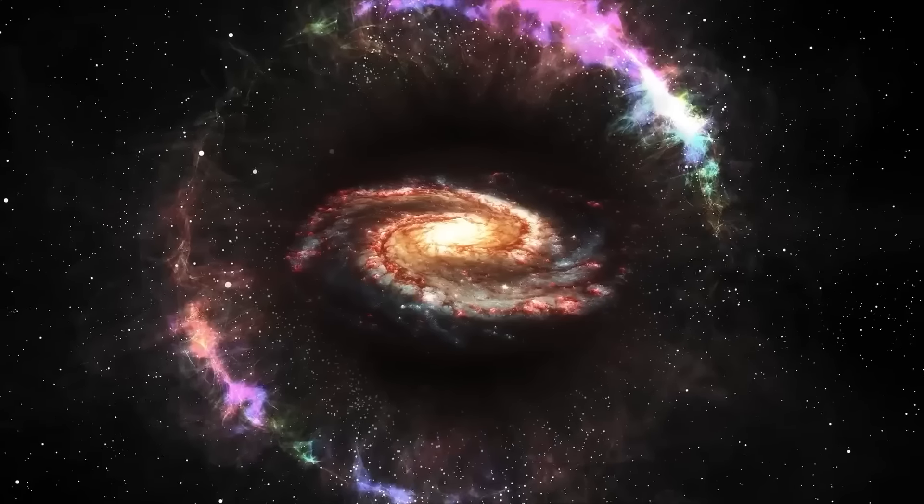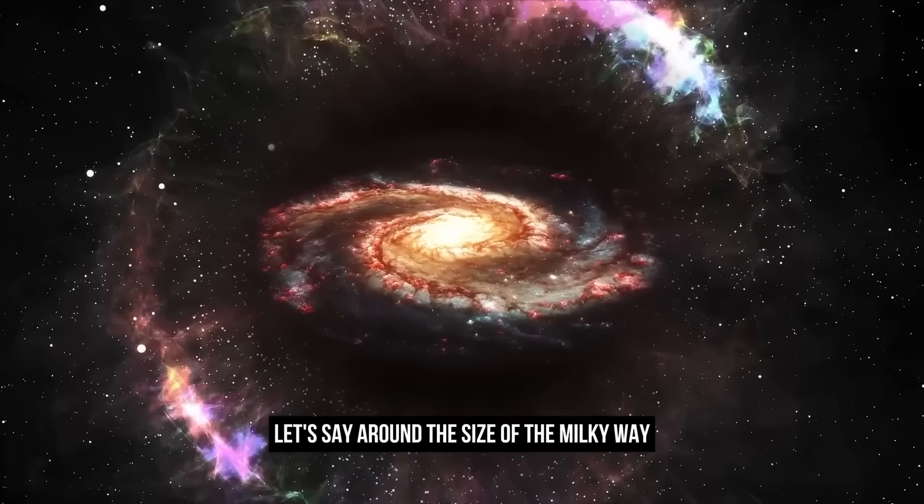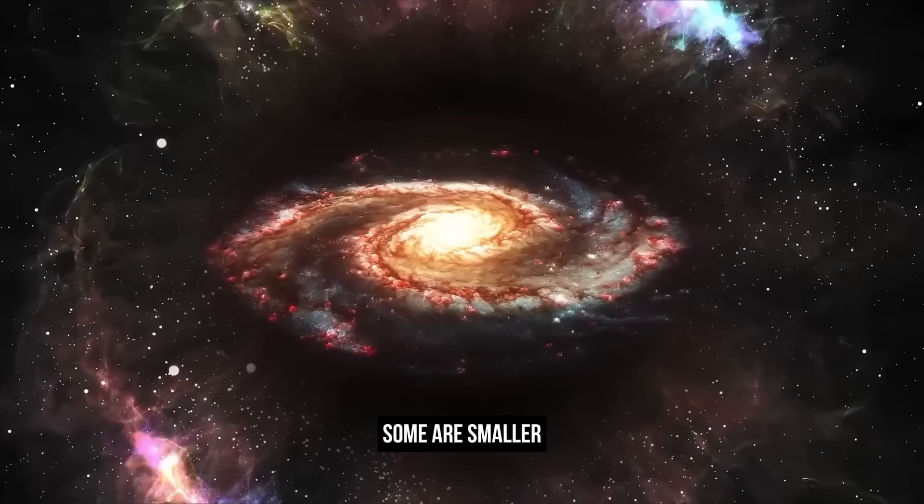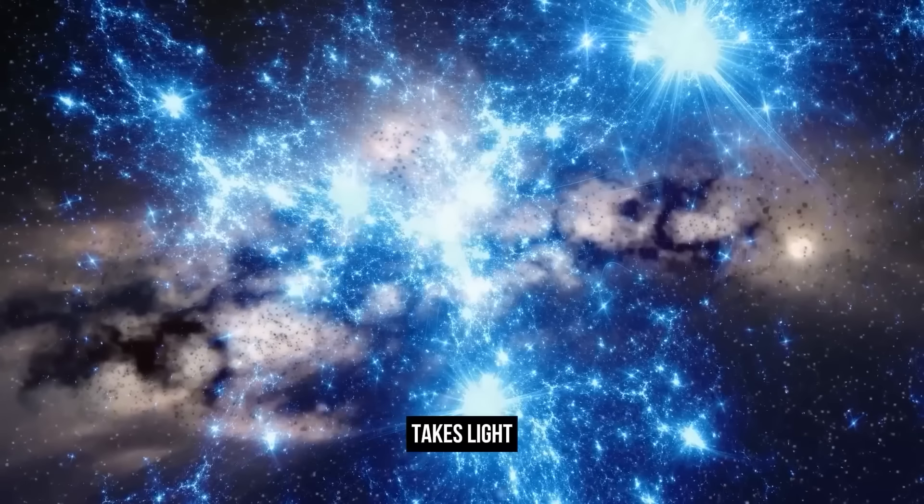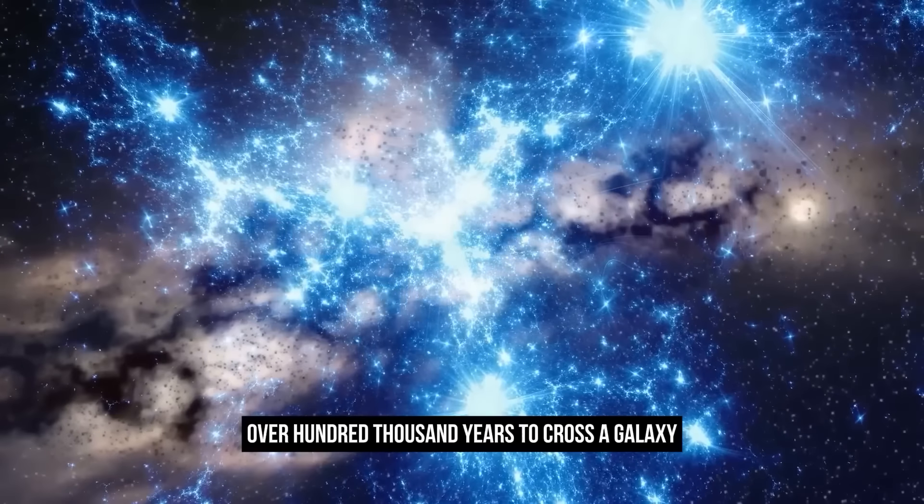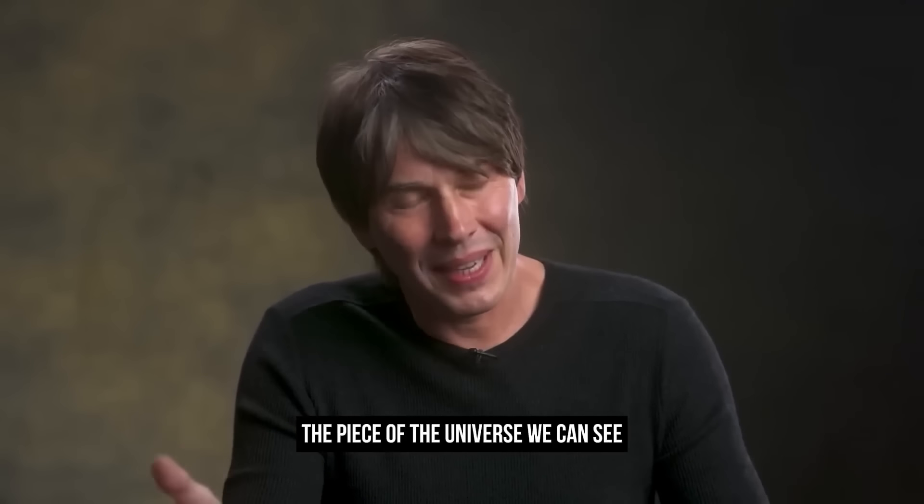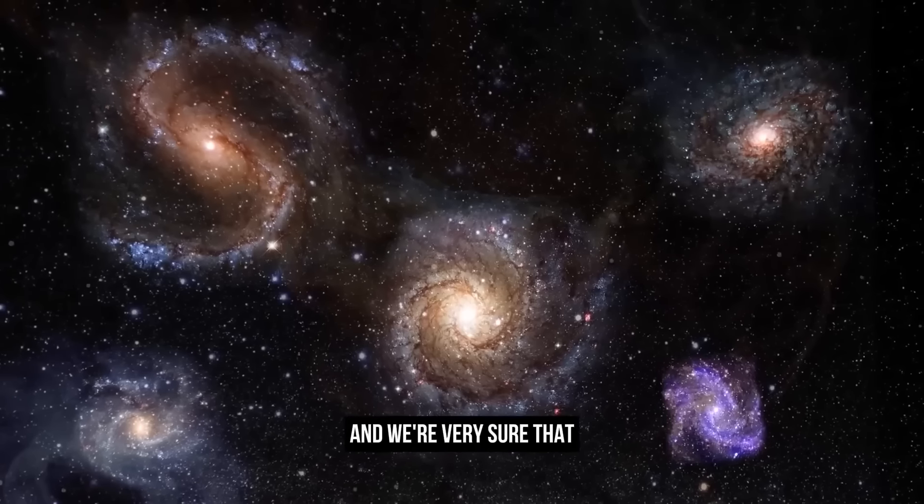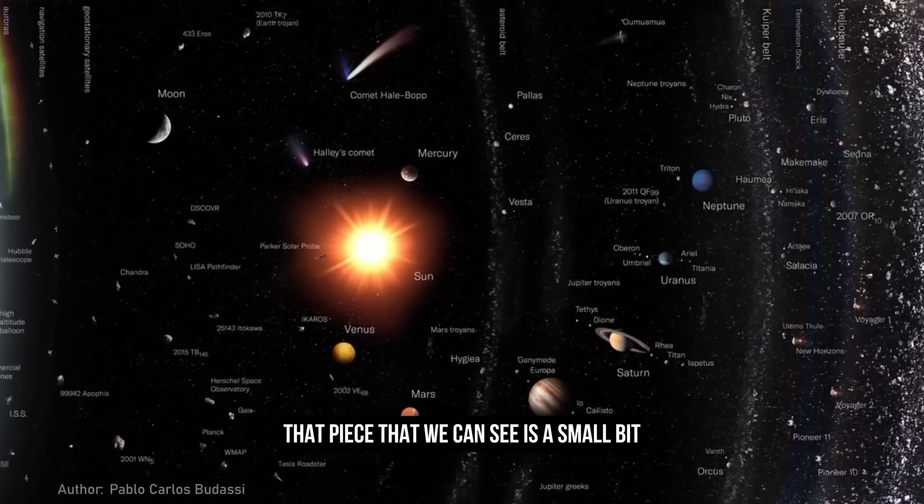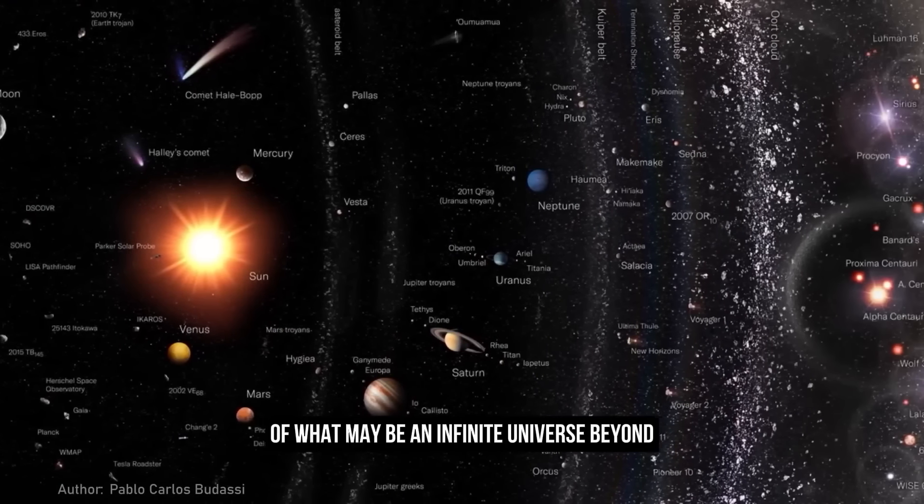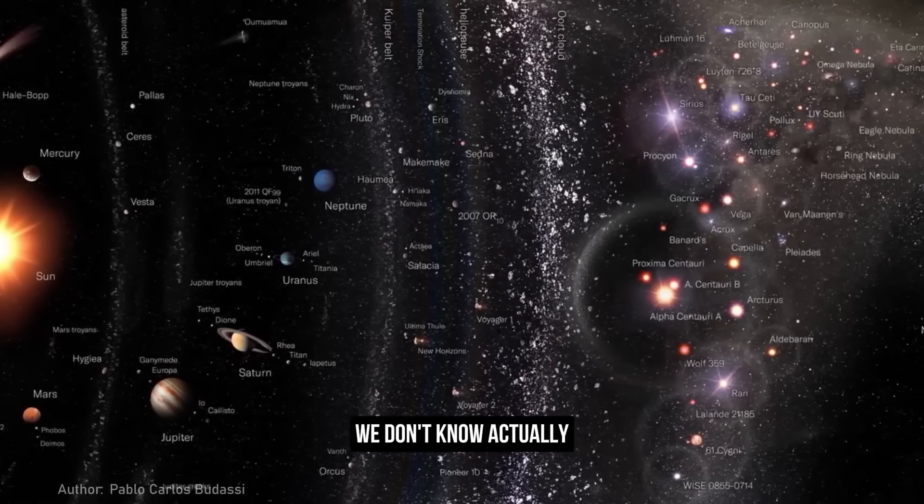Each galaxy is around the size of the Milky Way. Some are bigger, some are smaller, but the Milky Way has 400 billion stars in it. It takes light over 100,000 years to cross a galaxy. And there are two trillion of them in the piece of the universe we can see. And we're very sure that piece is a small bit of what may be an infinite universe beyond. We don't know, actually.